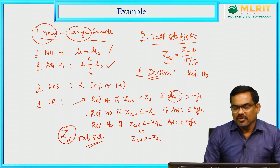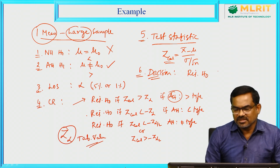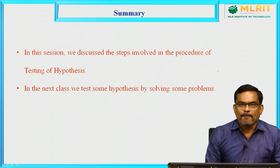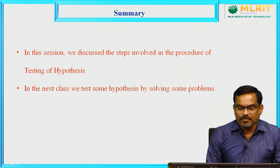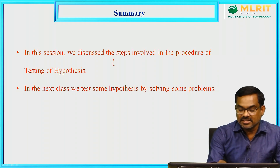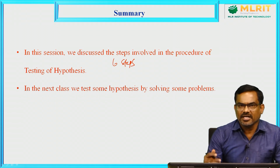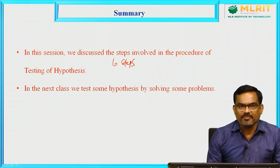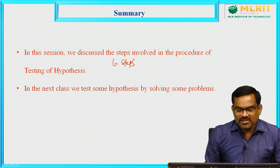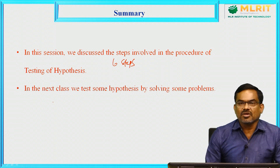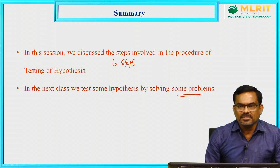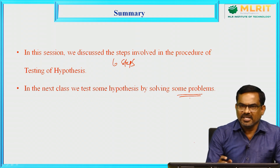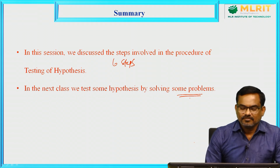We are going to discuss different types of tests along with examples in the coming sessions. Summary of the present session: we discussed the steps involved in the procedure of testing of hypothesis. There are six steps — starting with null hypothesis, alternative hypothesis, level of significance, critical region, test statistic, and the final decision. In the next session, we will test some hypotheses by solving problems covering means, proportions, variances, and goodness of fit tests. Thank you very much.